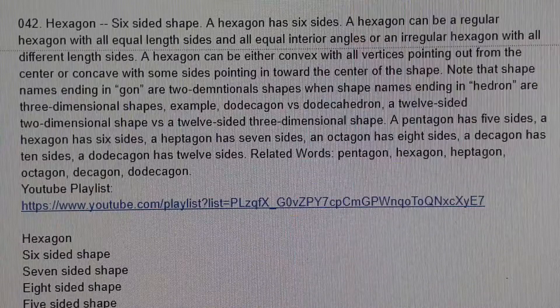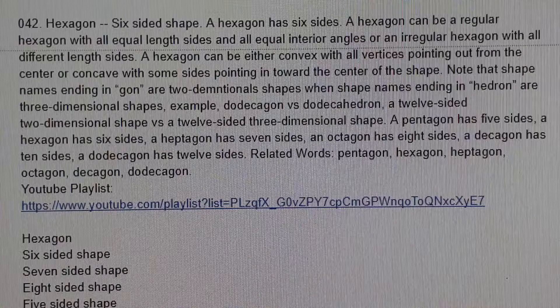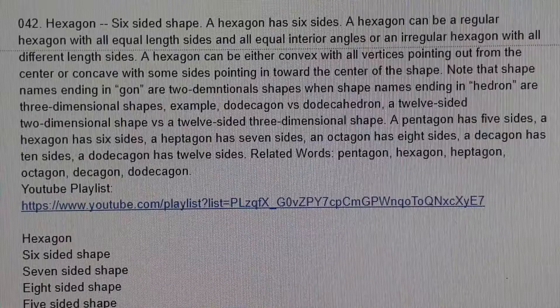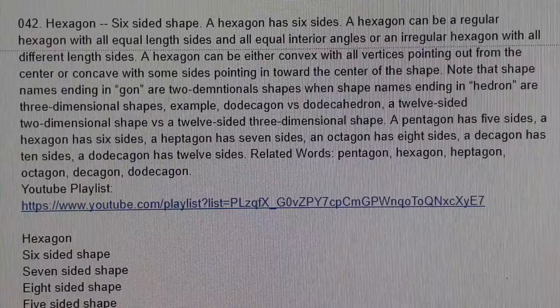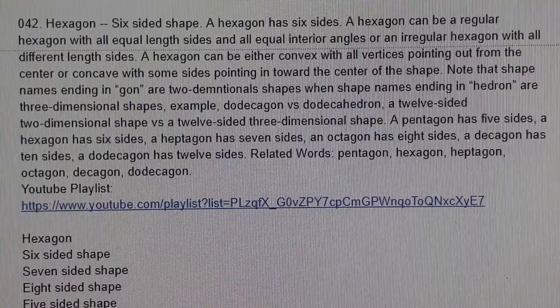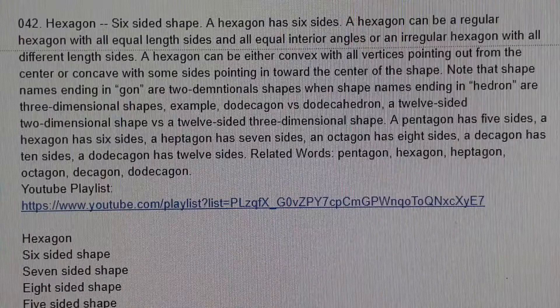Hexagon - six-sided shape. A hexagon has six sides. A hexagon can be a regular hexagon with all equal length sides and all equal interior angles, or an irregular hexagon with all different length sides.